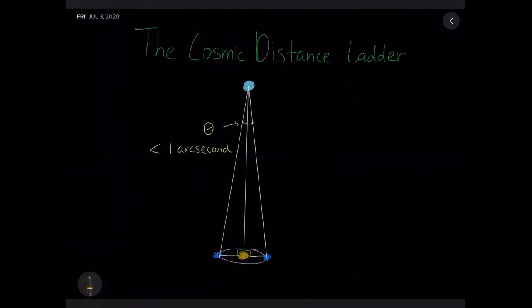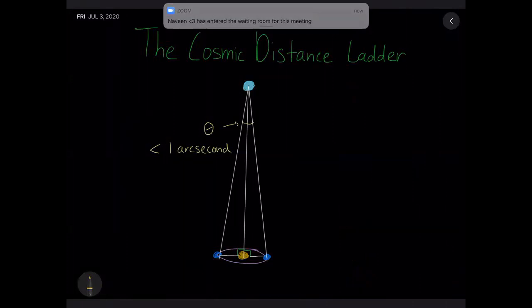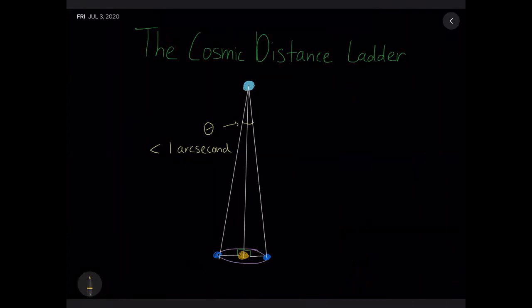Those are Kepler's laws. Now we move on to one of the cooler topics: the cosmic distance ladder. We mentioned earlier that one arc second is a very small measurement — there are over 1 million arc seconds in a circle. So why is this useful? Why do we use arc seconds?